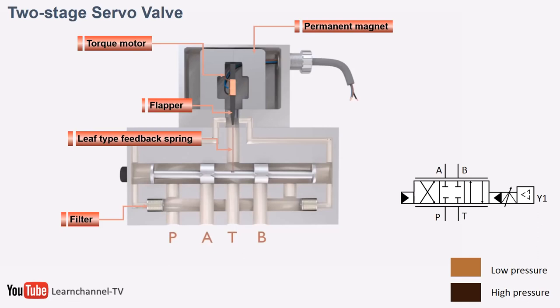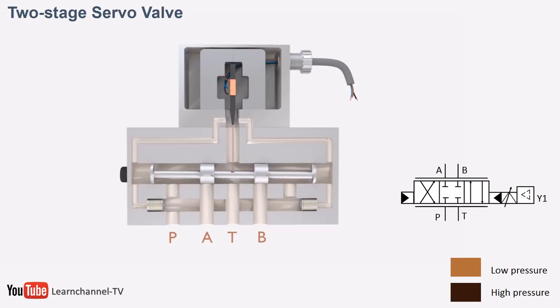The main difference between proportional and servo valves is that servo valves have a feedback of the spool which can be used as an internal signal for the controller to adjust the valve itself.